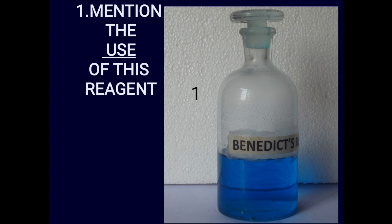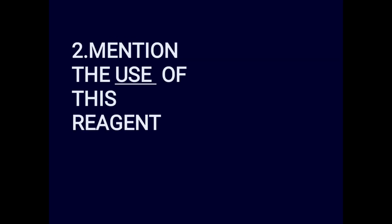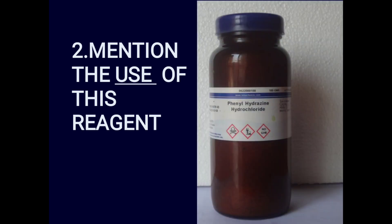This is actually a semi-quantitative or qualitative test. You add 5 ml of Benedict's reagent, which is blue in color, then add 8 drops or 0.5 ml of urine, mix and boil for two minutes. If reducing sugars are present, the color changes from light green to dark green, yellow, orange, and finally brick red. Brick red means almost precipitate, which is 4 plus. The use of this reagent is to detect the presence of reducing sugars.